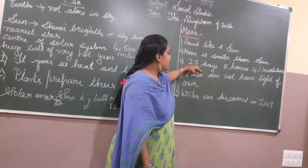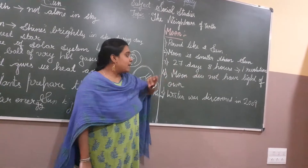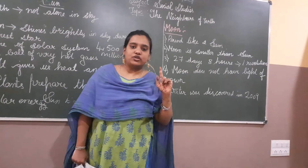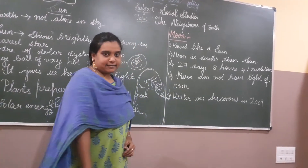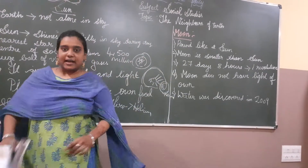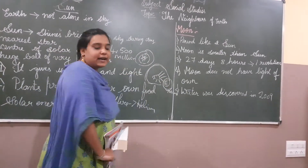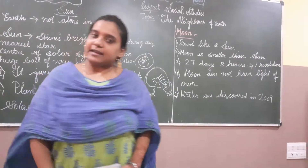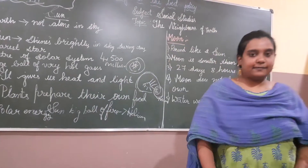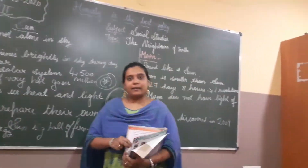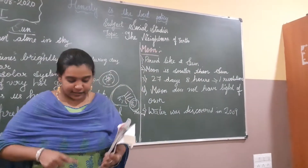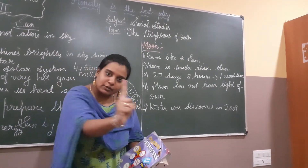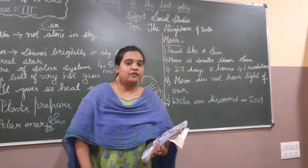Moon takes 27 days and 8 hours to complete one revolution. Rotation means spinning on its own axis; revolution means moving around another body. The sun stays in one place; earth rotates on its axis and also revolves around the sun. This is the difference between rotation and revolution.